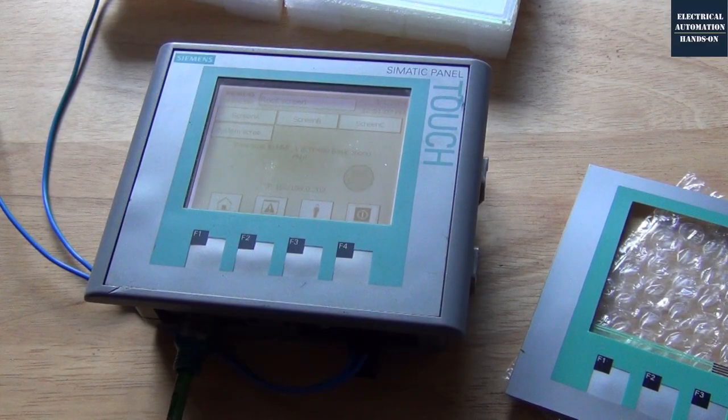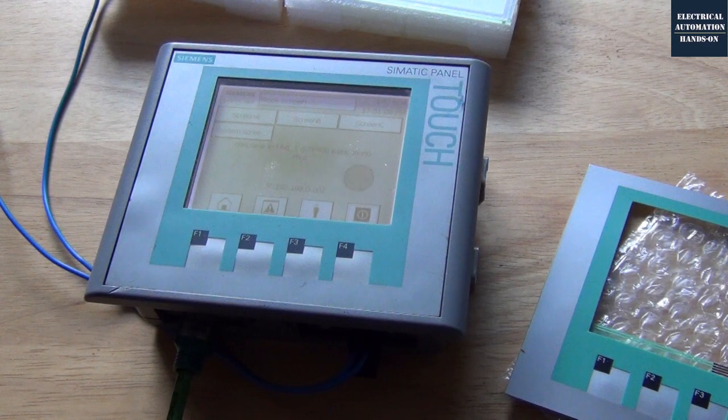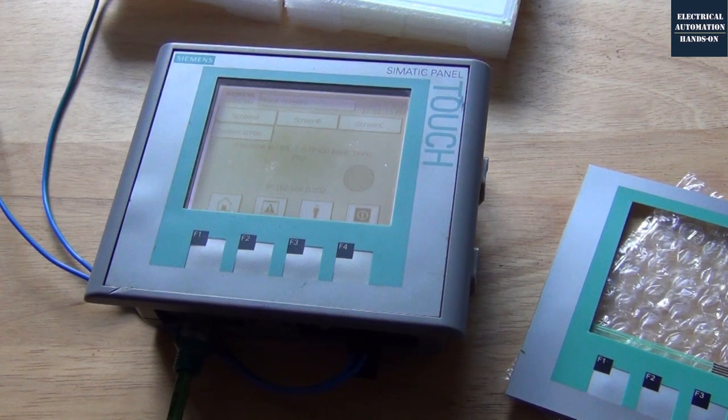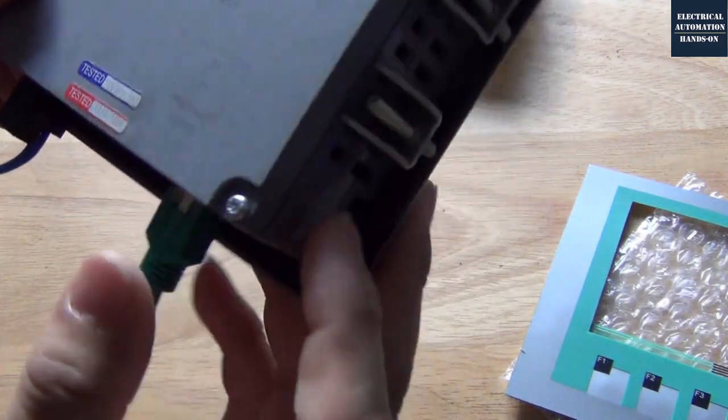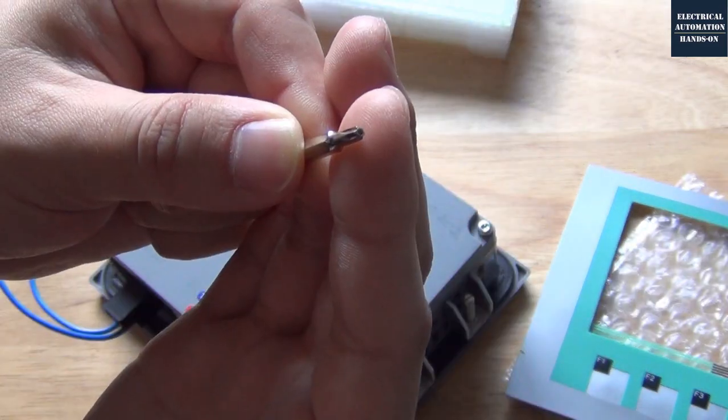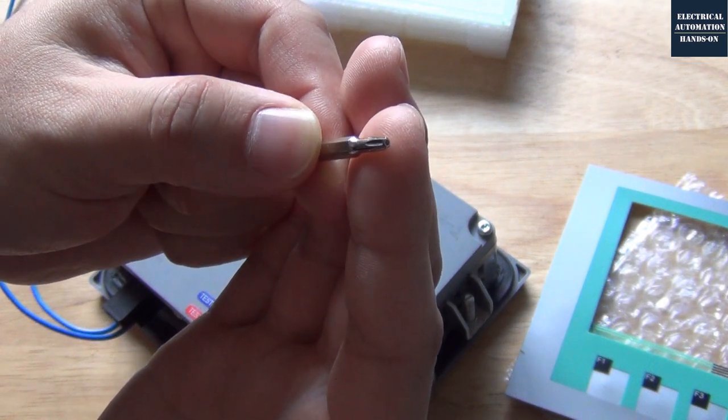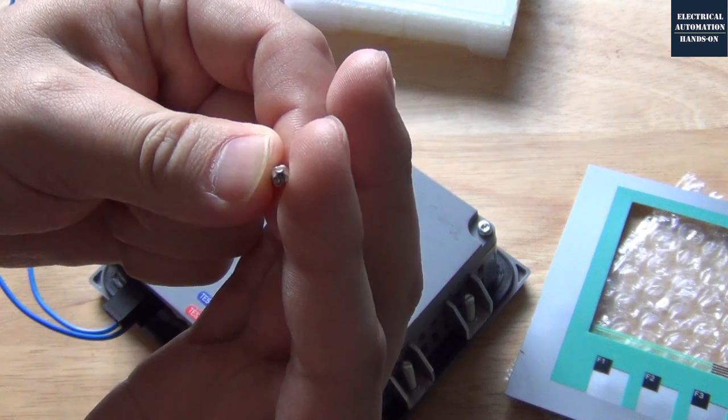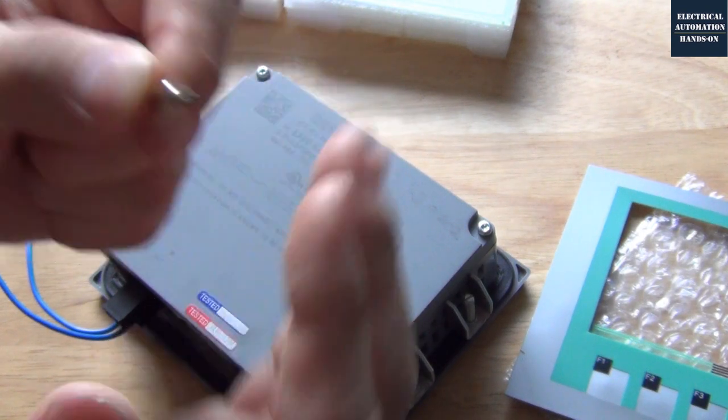Let me shut down the power and disconnect this power connector. And then let's prepare one screwdriver tool. Behind this HMI, take care that the screw is like this. So we need to prepare the screwdriver. The head is like a star.